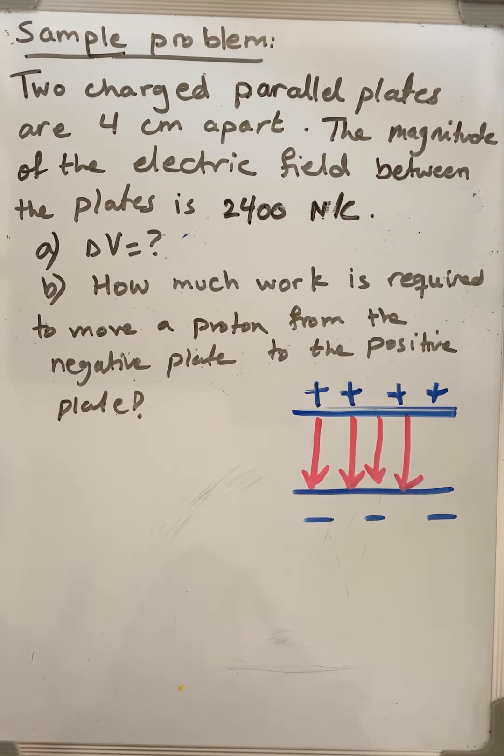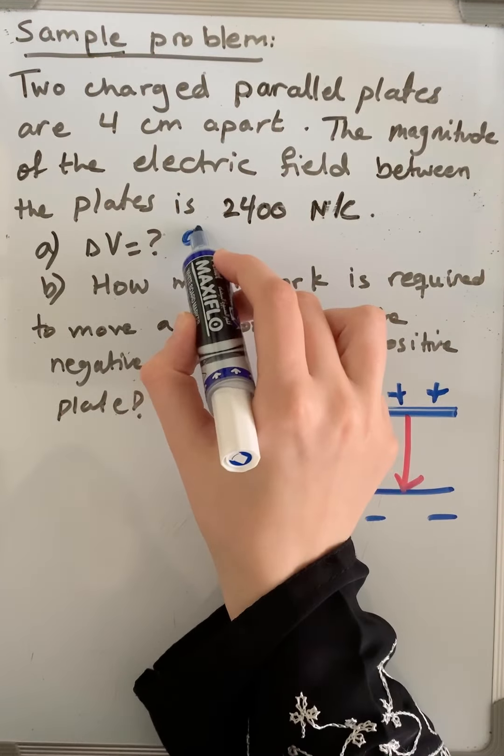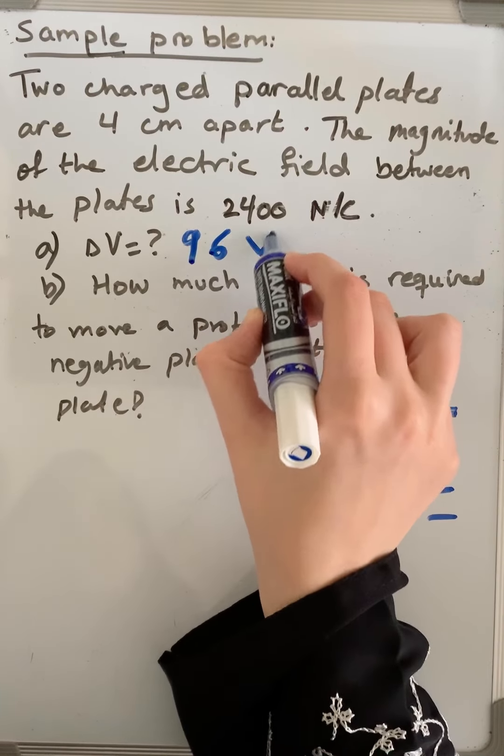So, in the first part, we calculated the potential difference, delta V, between the two plates, and we found that it was 96 volts.